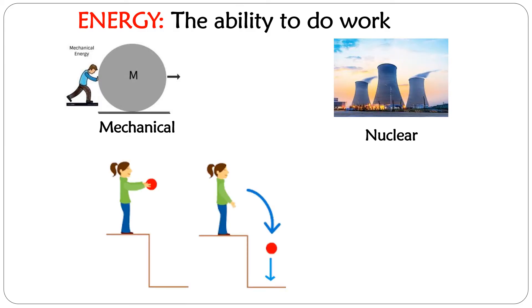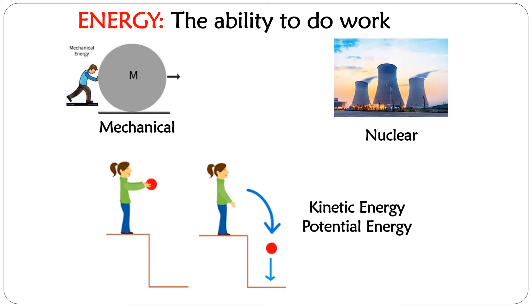Both fission and fusion release a lot of energy, which is nuclear energy. The last two most common types of energy are kinetic and potential energy. Kinetic energy is the energy of movement, and potential energy is the stored energy in anything.